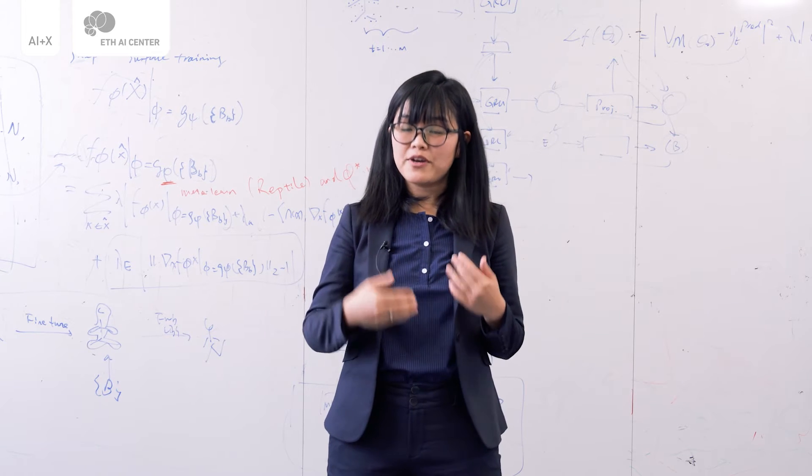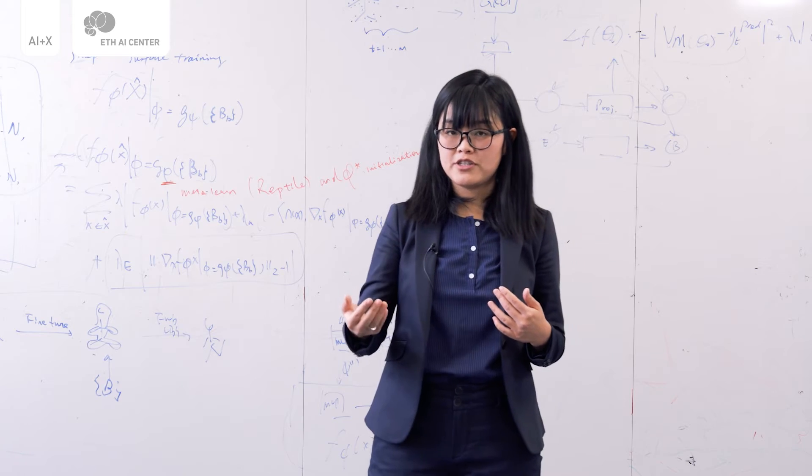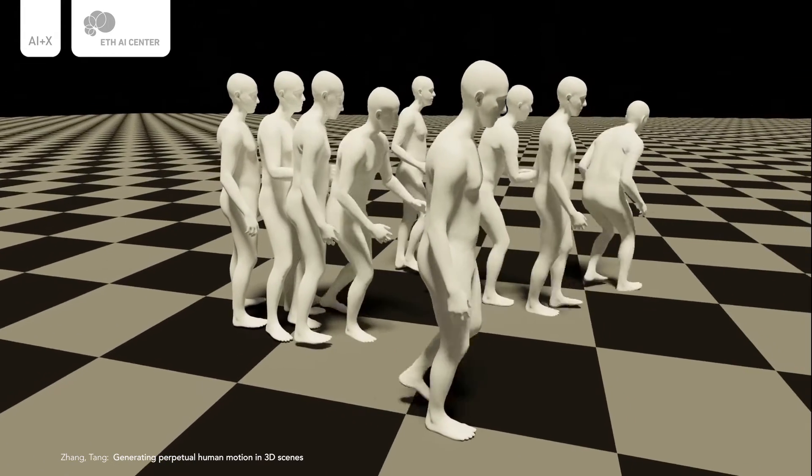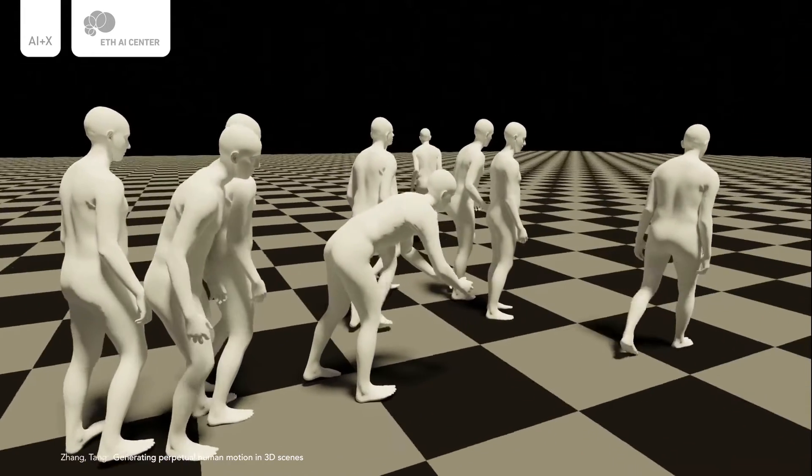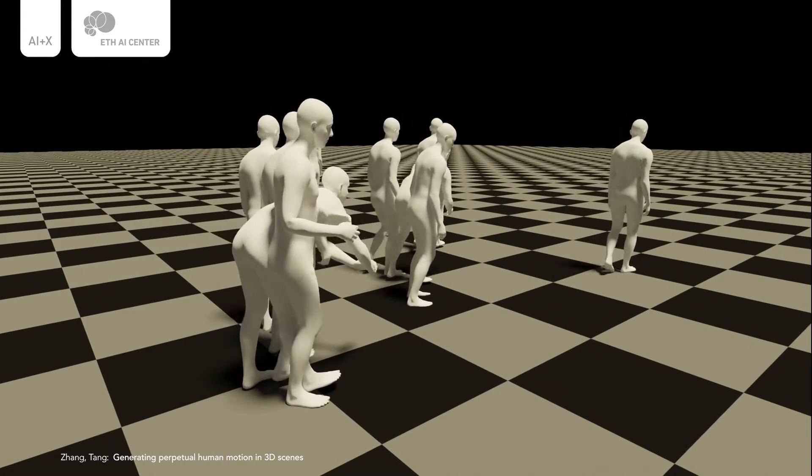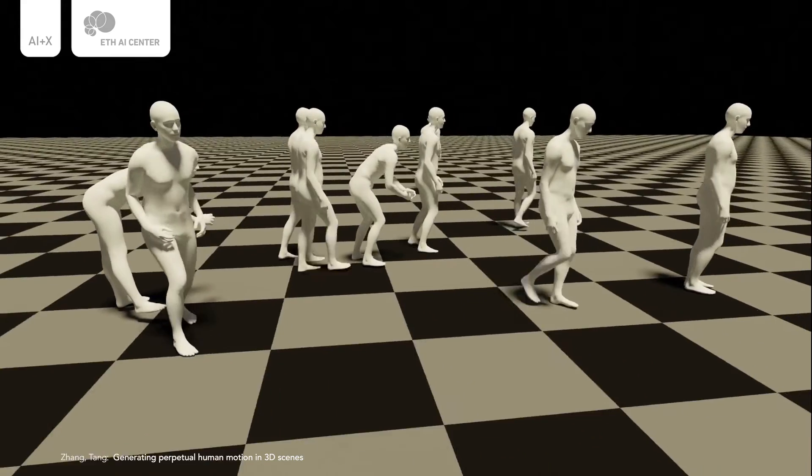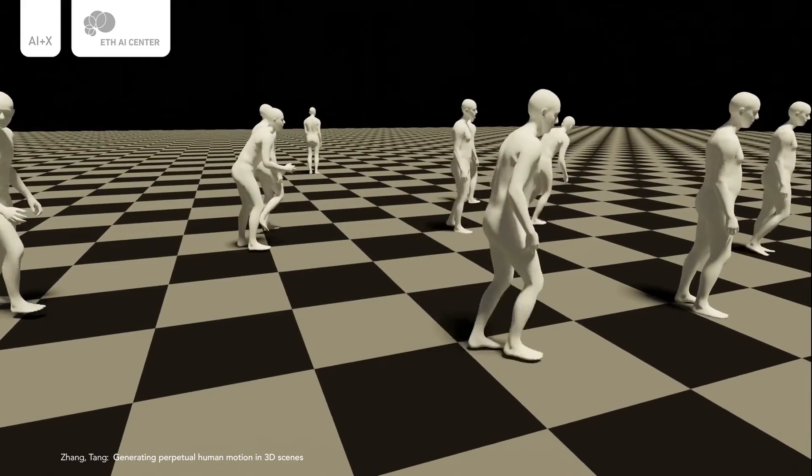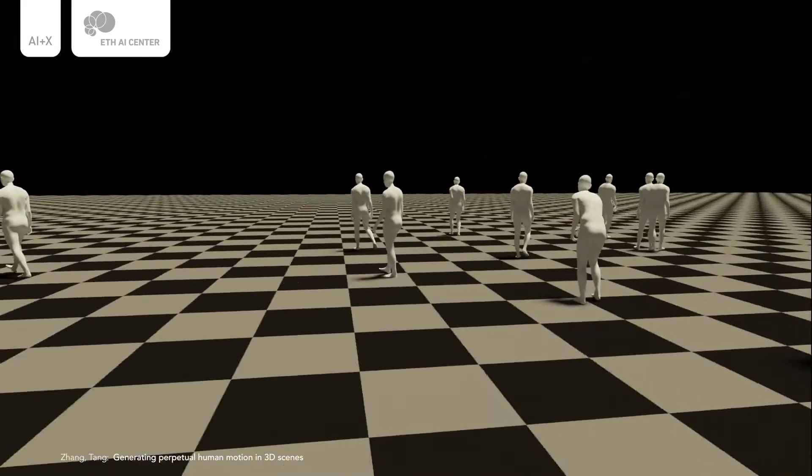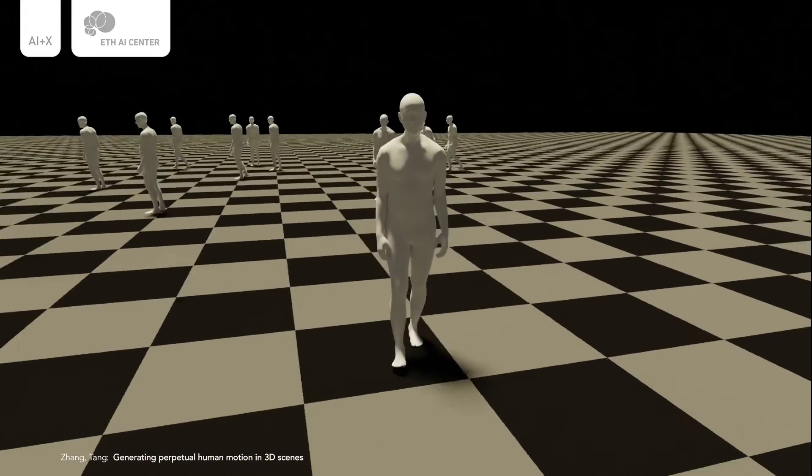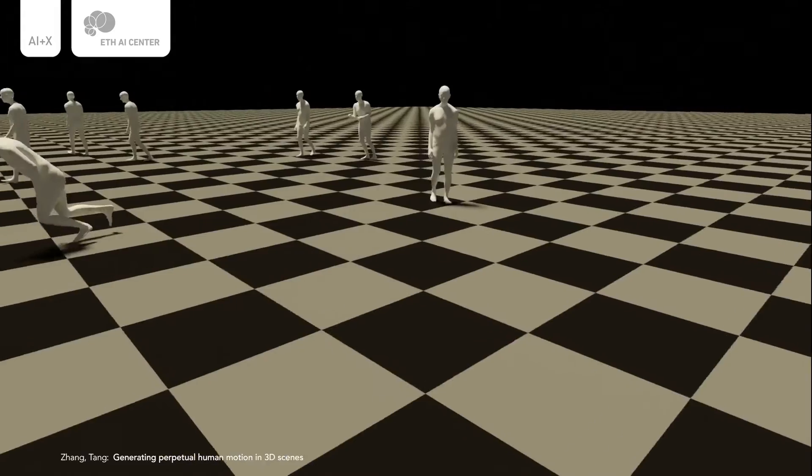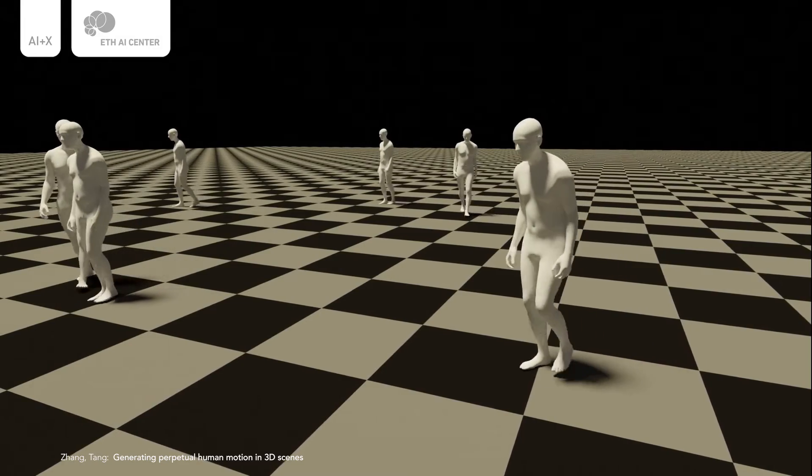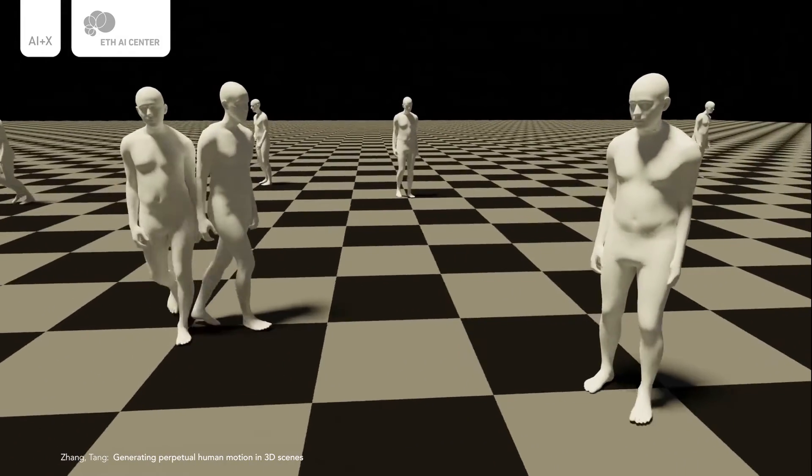Another work I would like to highlight is 3D human motion generation. A crucial step towards understanding human behaviors is to predict 3D human motions in the future. In a recent work, we propose a new autoregressive model to predict realistic full body motion. The key idea behind this work is we leverage a statistical body model to eliminate the accumulative errors of a recurrent neural network. We predict perpetual motion, which is different from most previous works. I think the result is quite exciting, and it is fun to watch these virtual humans moving in this 3D world.